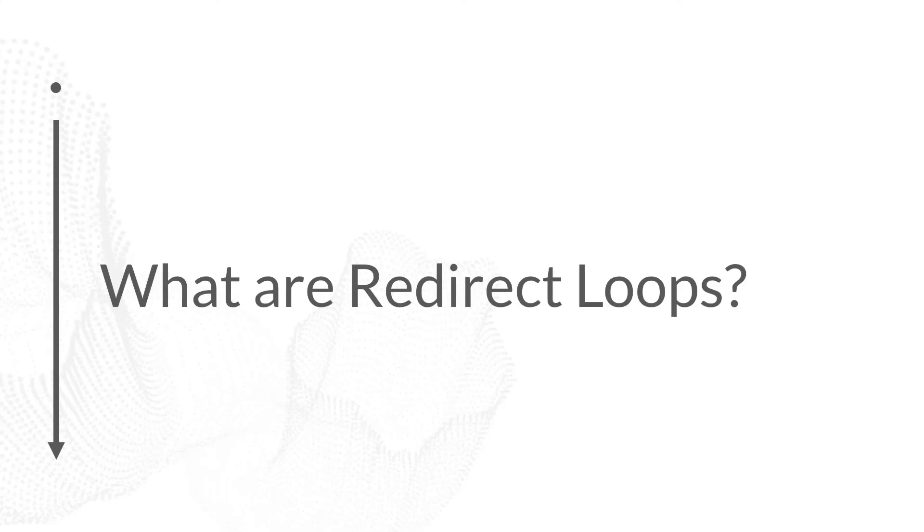What are redirect loops? A redirect loop is a redirect chain that never reaches an endpoint destination — it just keeps redirecting to other redirects. For example, page A redirects to page B, page B redirects to page C, and page C redirects back to page A.